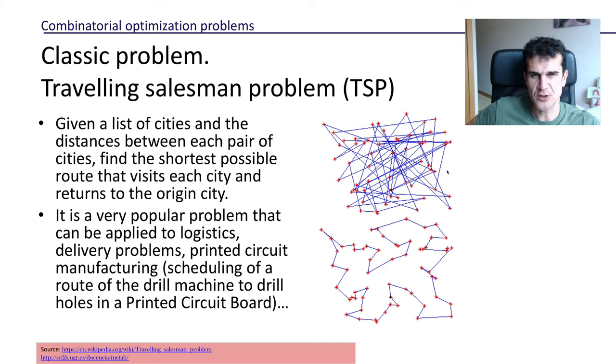The classical problem, by all means, in combinatorial optimization is the traveling salesman problem. We've talked a little bit about it in the previous video, but basically we are given a list of cities and the distance between each pair of cities, and what we want to find is the shortest possible route that goes through each of these cities. This problem has many applications.